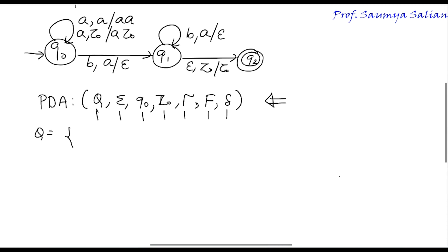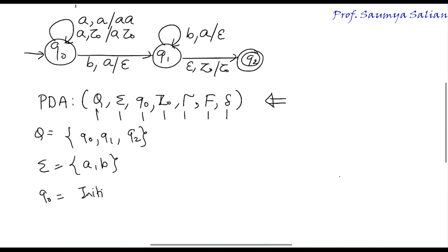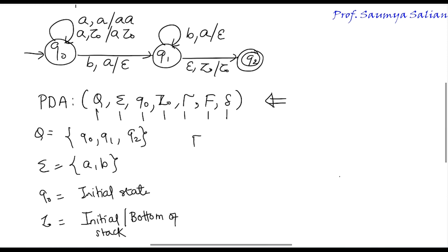Q is the set of finite states — in my machine I have q0, q1, and q2. Σ is the input alphabet set, that is {A, B}. q0 is my initial state. Z0 is my initial or bottom symbol of the stack. Γ is my stack alphabet. F is the finite set of final states — here I have only one final state, q2.